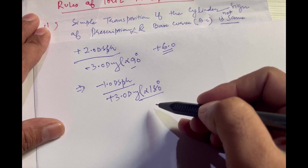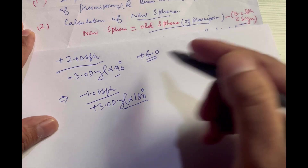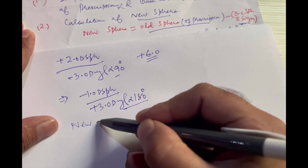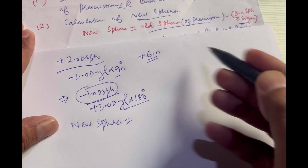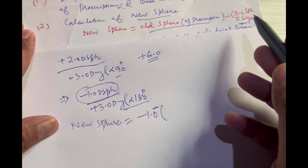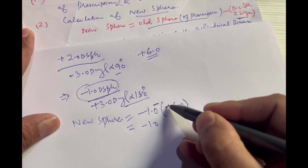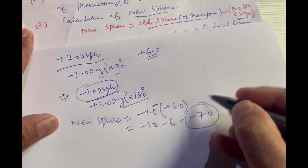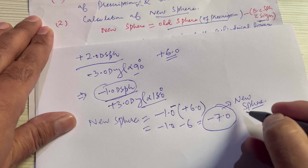Applying Rule 2, we calculate the new sphere: new sphere equals old sphere minus base curve with sign. The old sphere after simple transposition is -1, and the base curve with sign is +6. So new sphere = -1 - (+6) = -1 - 6 = -7. Our new sphere is -7.